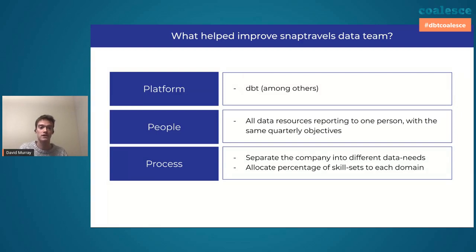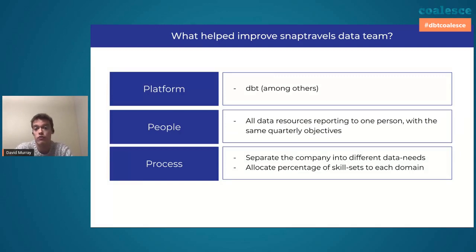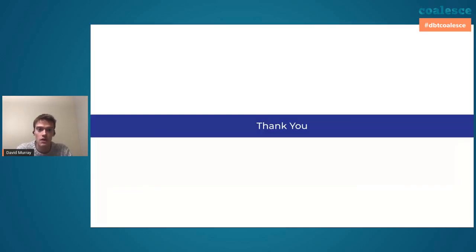The people part is getting everyone who's working on data problems onto the same team. And the process part is helping that team focus on the things that matter — making sure people are not pigeonholed in different parts of the organization, splitting people up so that maybe ten percent of their job is one domain if required. We found that to be a super helpful way to address data problems, and we're looking forward to continuing to scale as the SnapTravel data team continues to grow.